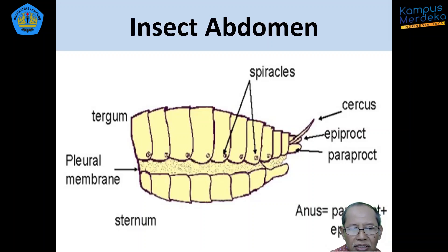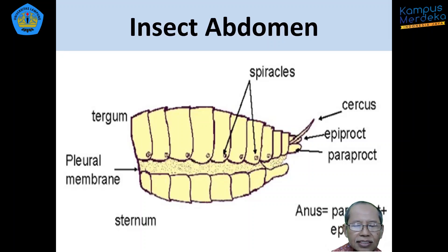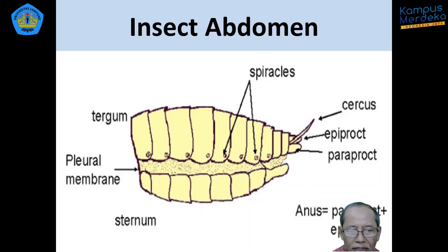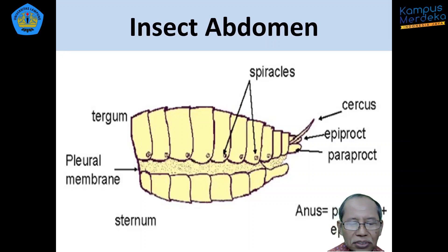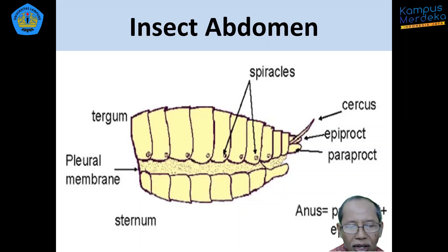Sisi ventral atau sisi bawah, sebagai kebalikan dari sisi dorsal, ruas-ruasnya disebut sternum. Pada abdomen, sisi samping yang disebut pleura atau pleurum berwujud sebagai membran, semacam selaput tipis yang tidak mengalami sklerotisasi, bersifat membraneus. Jadi pleura membraneus adalah bagian sisi kanan dan kiri abdomen.